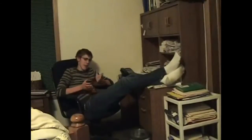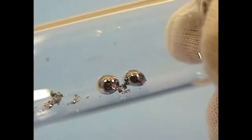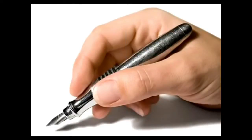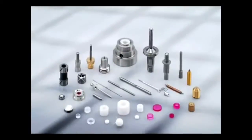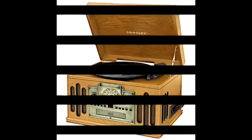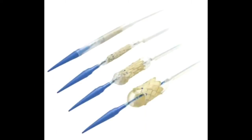You may be asking yourself, how has Osmium been used? Osmium is used for many interesting applications. It has been used to detect fingerprints. Osmium alloys are used for fountain pen tips, instrument pivots, electrical contacts, and tachographs.